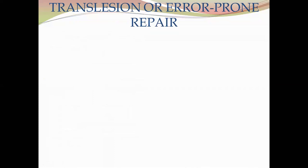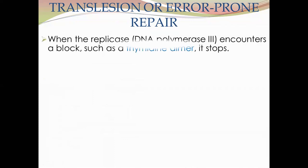The last type of the DNA repair system is the translession or error-prone repair system. When the replicase DNA polymerase III encounters a block, this system becomes relevant.